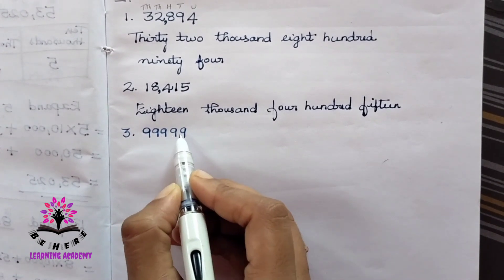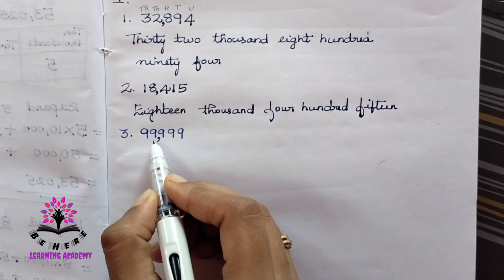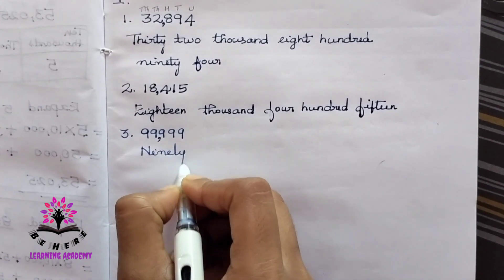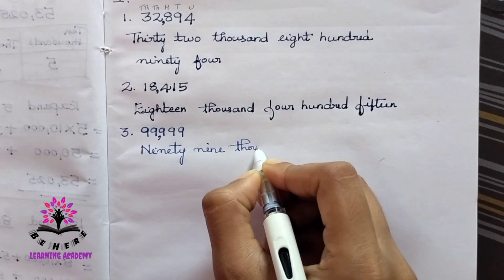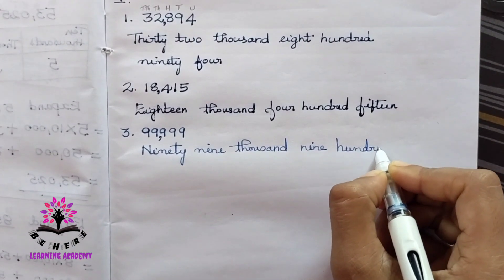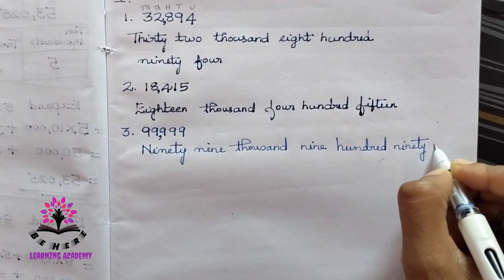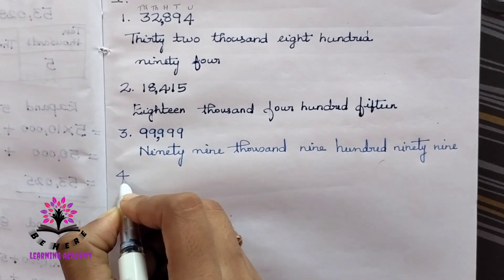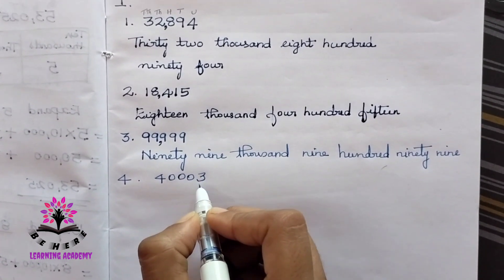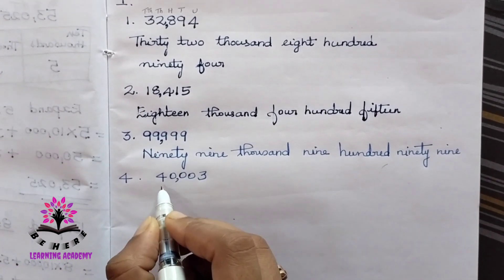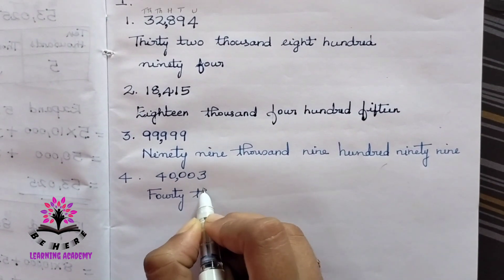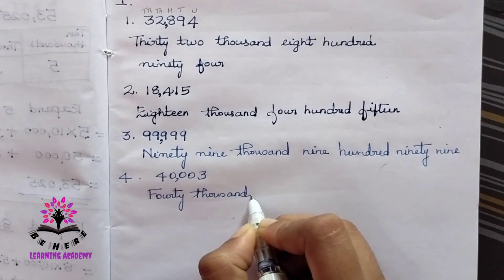See the next one: 99999. First let us put the comma after the hundreds place. This number is ninety-nine thousand nine hundred and ninety-nine. The next question is 40003. Put the comma after the hundreds place: this will be 40,003 — forty thousand and three.